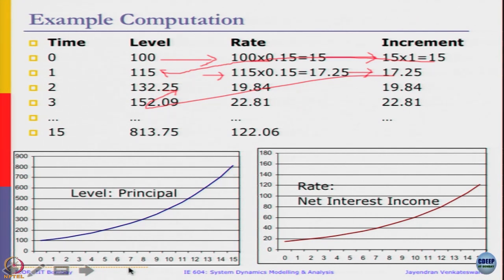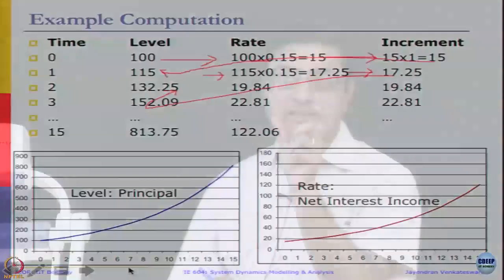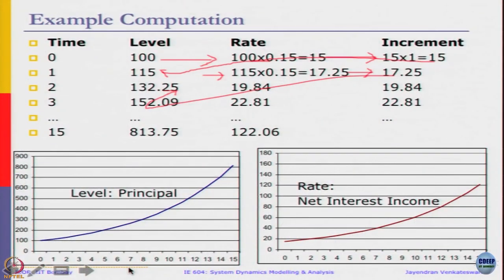With a constant, the interesting thing about this exponential system is there is a constant doubling time. After a constant time unit passes, my stock value doubles in value, which is the characteristic of such an exponential system. In this particular example, it happens to be 5 time periods approximately, but we can actually compute this.